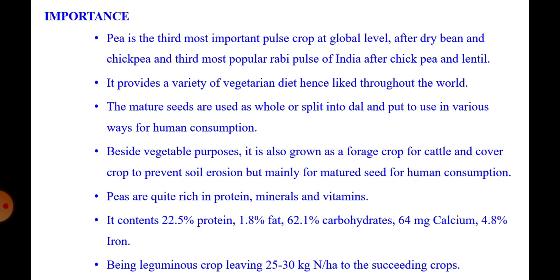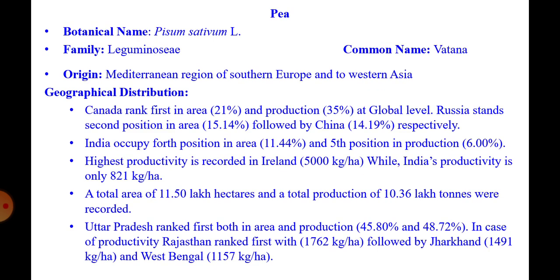Being a leguminous crop, it has the capacity to fix 25 to 30 kg nitrogen per hectare to the succeeding crop. Pisum sativum is the botanical name of this pea, which comes under family Leguminosae.